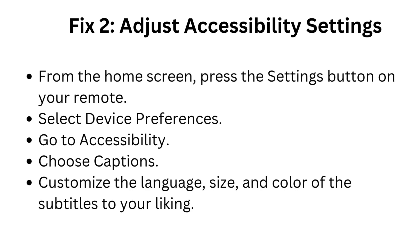Fix 2: Adjust accessibility settings from the home screen. Press the settings button on your remote. Select device preferences, then go to accessibility. Choose captions, and customize the language, size, and color of the subtitles to your liking.